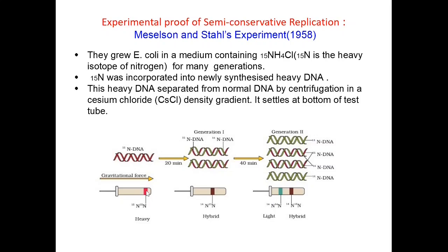This heavy DNA was separated from normal DNA by centrifugation in a cesium chloride density gradient. The cesium chloride gradient is the method for separating DNA based on its density — the lightest density substances remain at the top whereas the heaviest ones settle at the bottom. So the heavy DNA molecules settle at the bottom of the test tube.